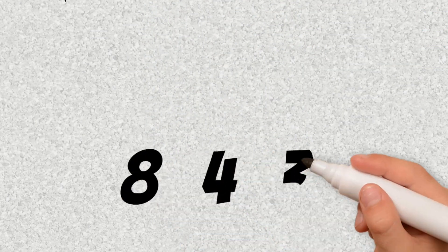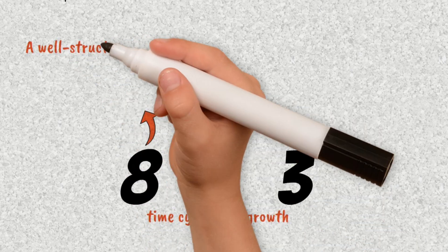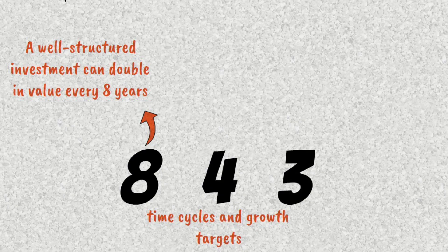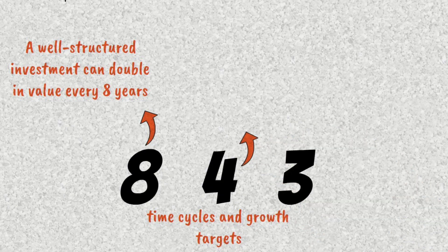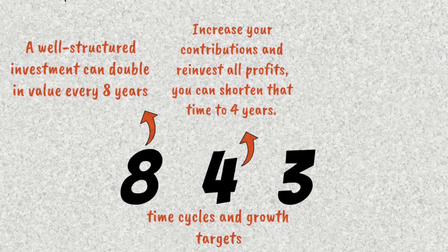The logic is straightforward: 8, 4, and 3 represent time cycles and growth targets. On average, a well-structured investment can double in value every 8 years. But if you increase your contributions and reinvest all profits, you can shorten that time to 4 years. And with a more intense strategic effort, such as extra contributions and immediate reinvestment, you can shorten it even further to 3 years.